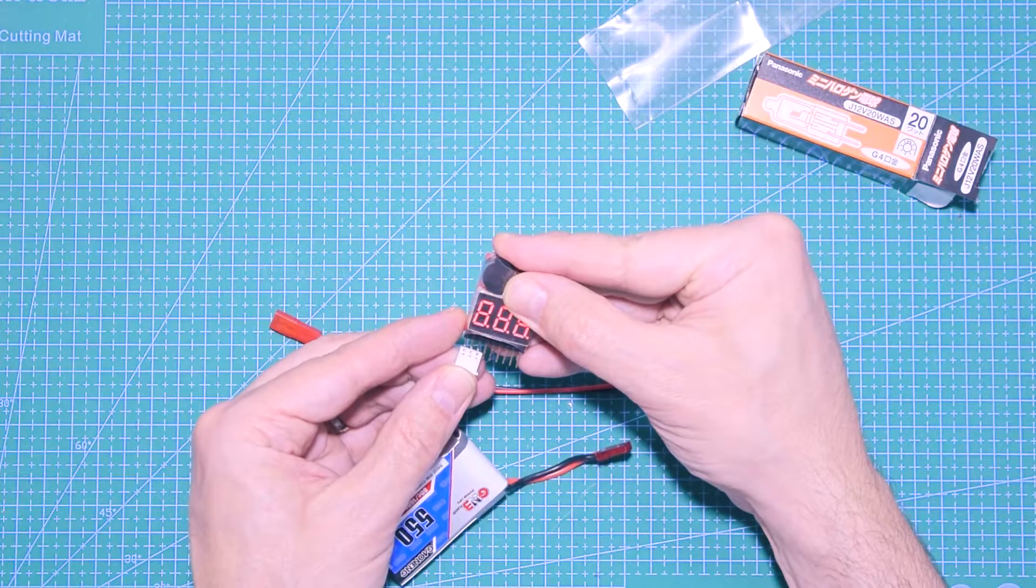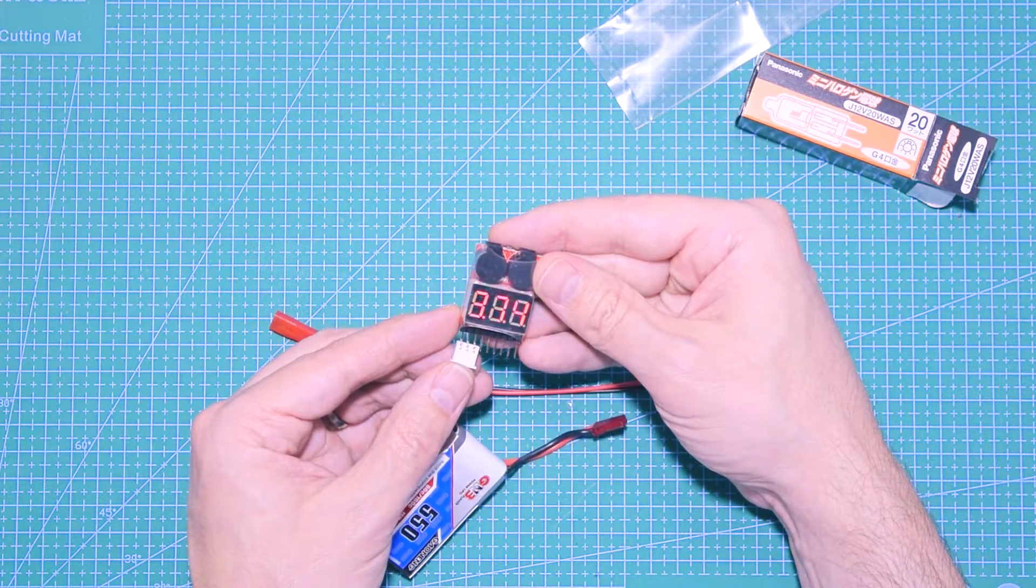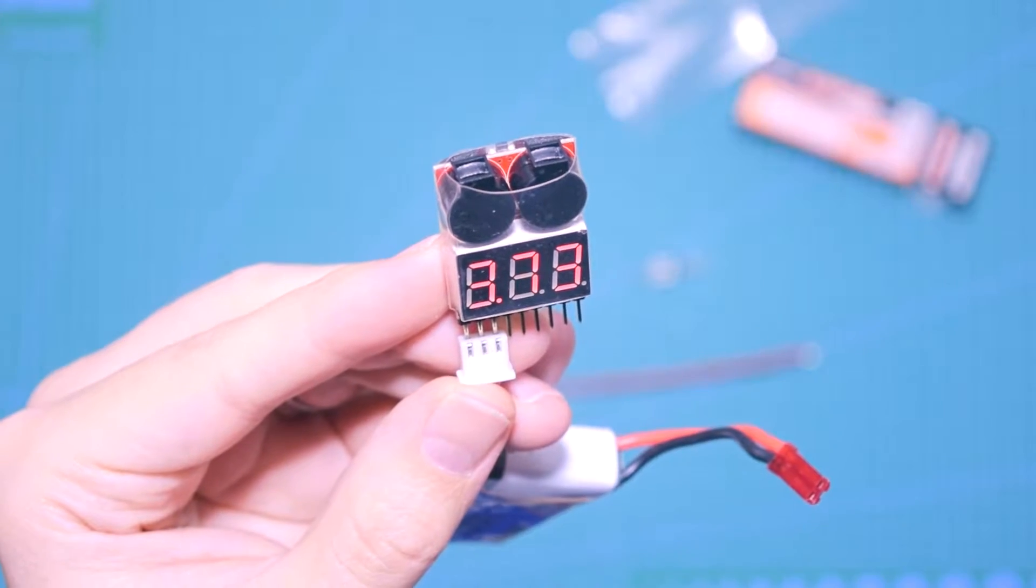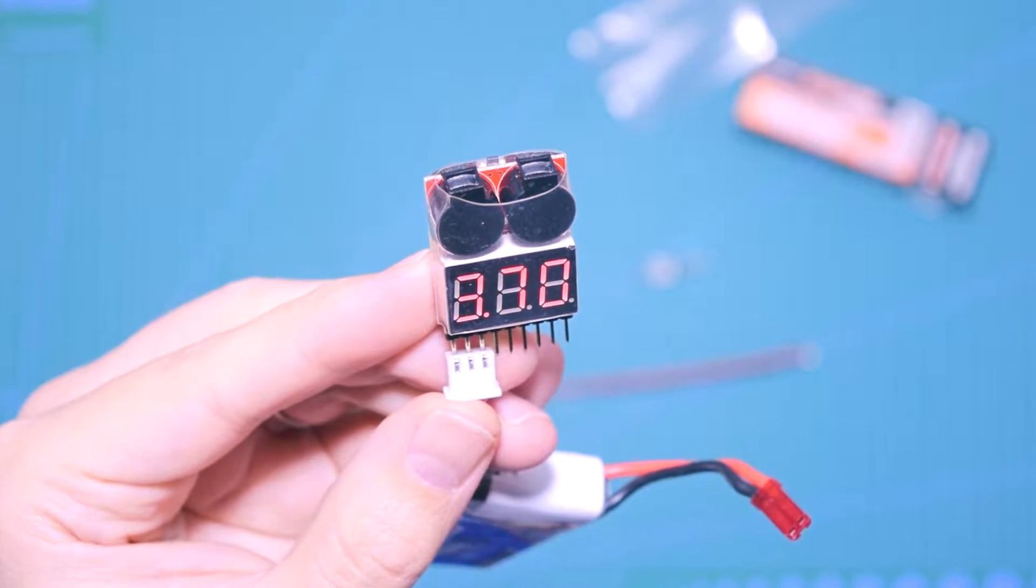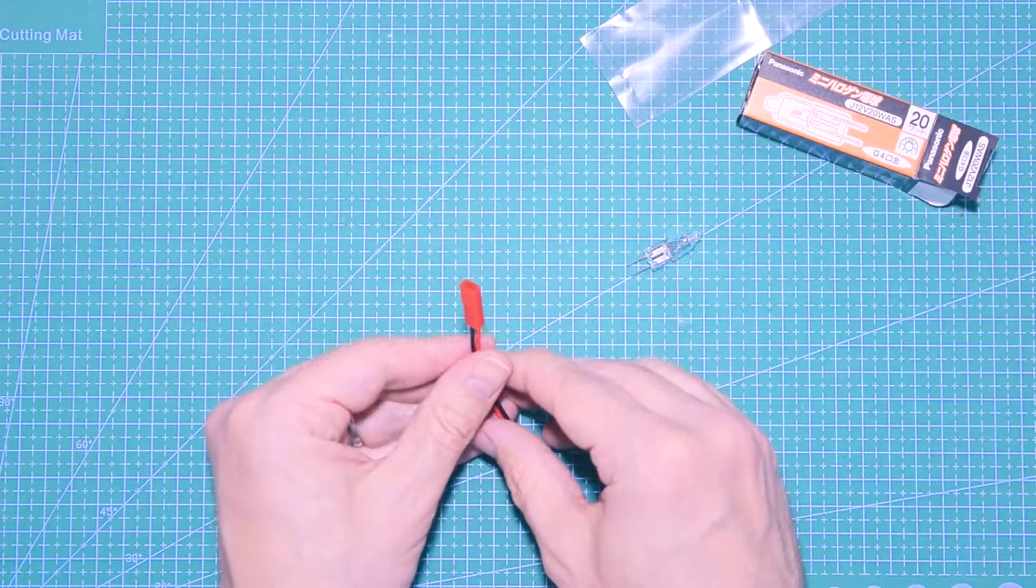You just plug the pins in the balance port of your lipo and it might be a little bit difficult to see but it's going through and it's showing the total voltage as well as the single cell voltage.